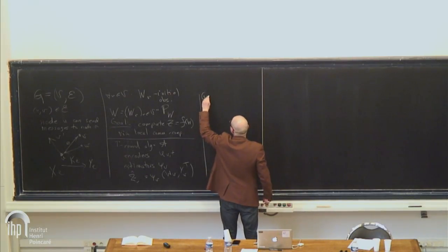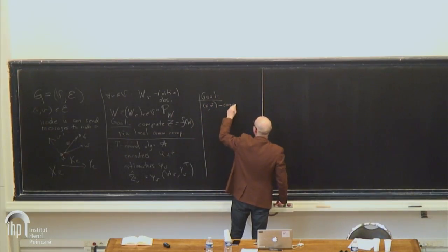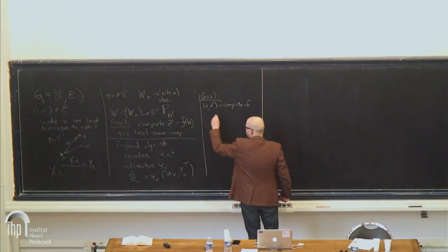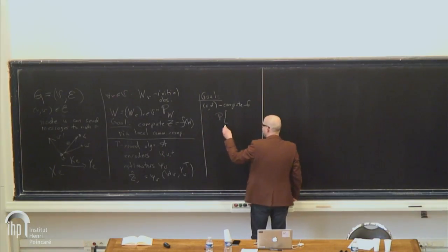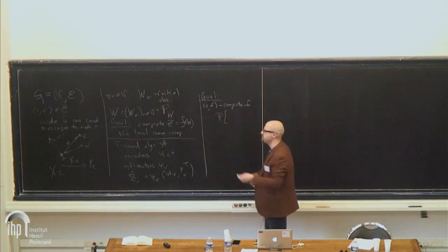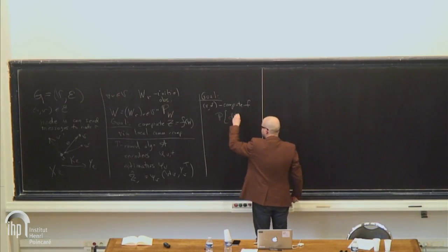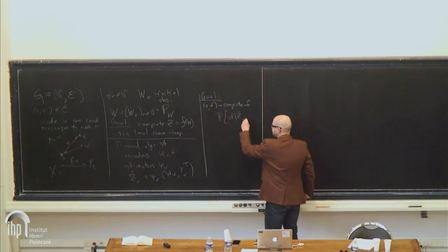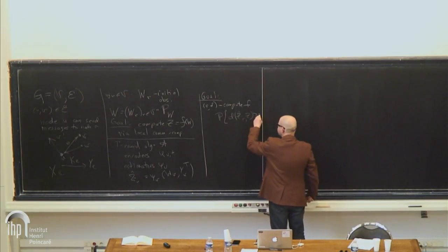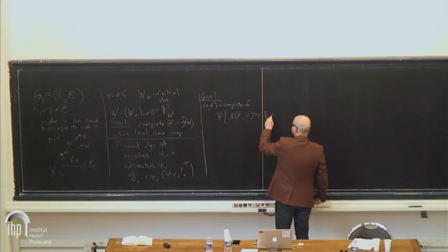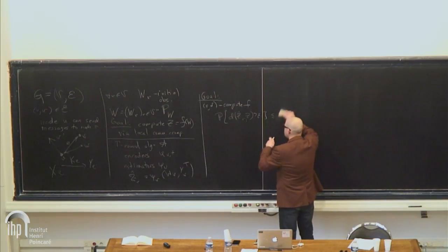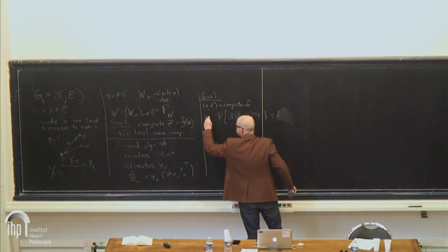The goal is to ε-δ compute F, which means the following. I posit a distortion or loss function D, and the probability that the distortion between node V's estimate of Z and Z is greater than ε is less than δ, in the worst case over all nodes.